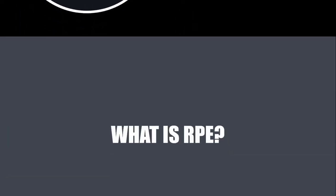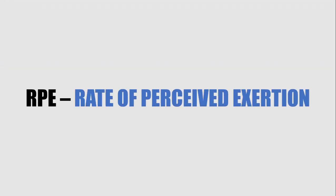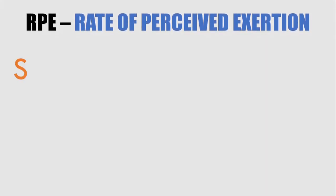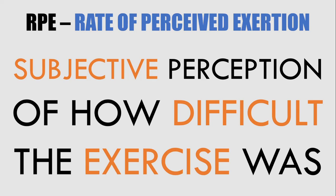First, we need to establish what RPE is. RPE stands for Rate of Perceived Exertion, essentially meaning how hard was this exercise. It uses a number system from 1 to 10 to determine how difficult a given exercise was. This is based purely on subjective feeling, meaning that factors such as mood, pain tolerance, supplements, and experience level can all influence how we score our RPE.